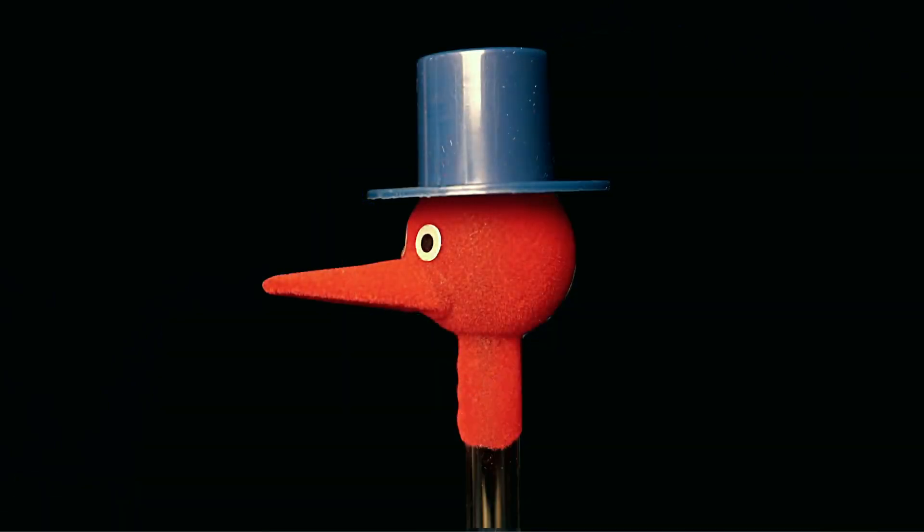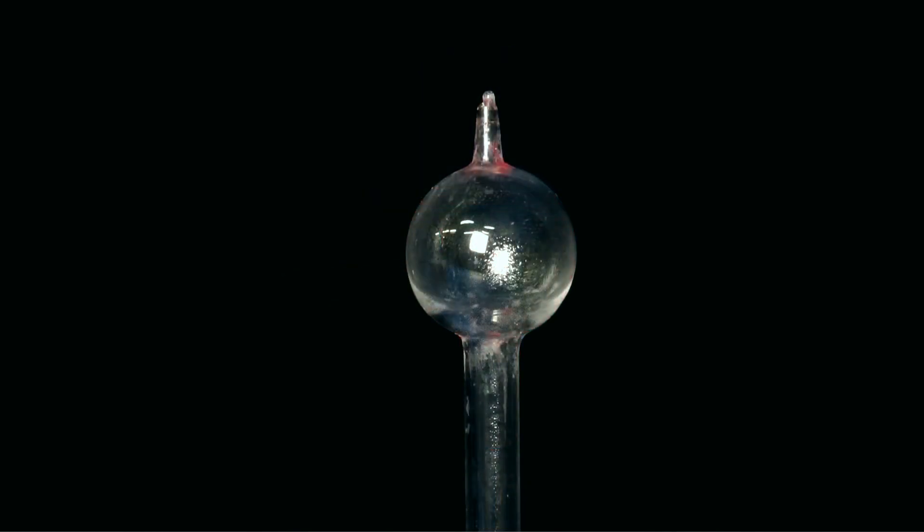As long as there's water, the bird keeps drinking. Let's look inside the bird to get an idea of how it works. Underneath the bird's hat, beak and fabric covering, lies a glass bulb, smaller than the bulb at the base and also rounder.